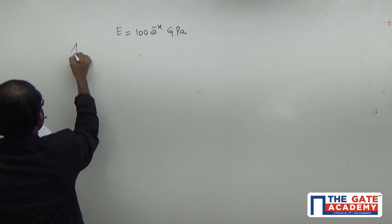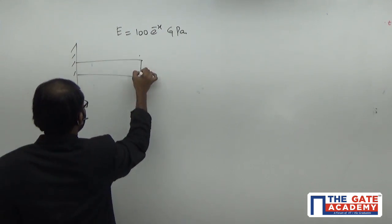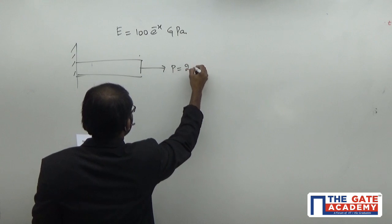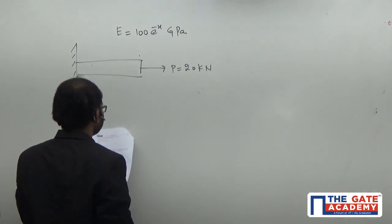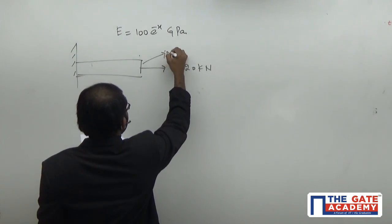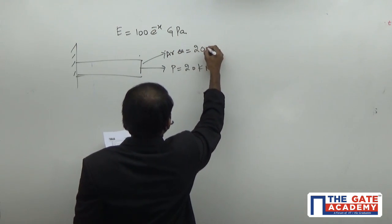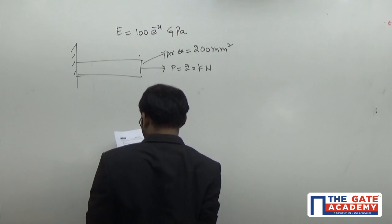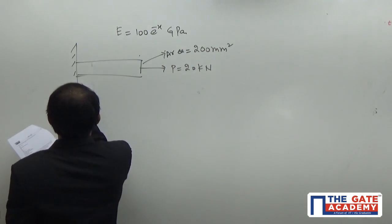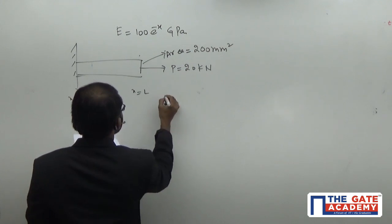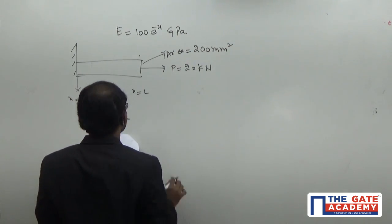Remaining parameters are all given in the diagram itself. It's a rod experiencing a load of 20 kilonewton. Area of cross section is given as 200 millimeter square. The length is from x equals 0 to x equals L, and the modulus of elasticity is varying along this way. x equals 1 meter here.